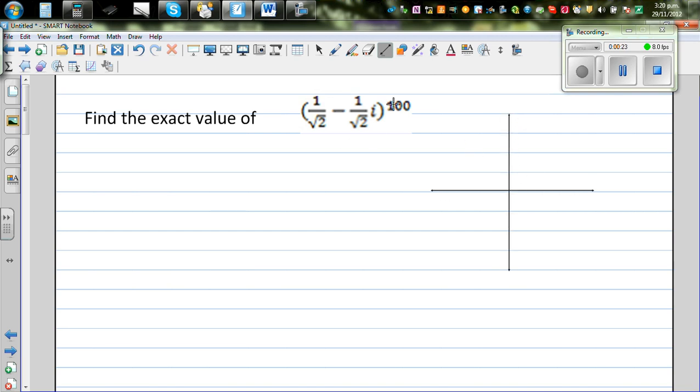So let me explain what this means. I want to plot this rectangular form, which is 1 over root 2 minus 1 over root 2i. So this is your real arm, and this is the imaginary arm. Say this is 1 over root 2, and say this is minus 1 over root 2i. So this point is referred as 1 over root 2, minus 1 over root 2i.